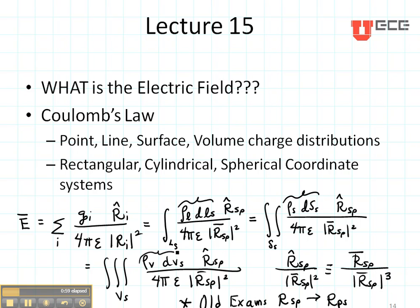I want to make two notes here. One is remember there's an alternate form: any time that you have a unit vector divided by a magnitude squared, that's equivalent to the vector — not the unit vector, but the vector — divided by the magnitude cubed.